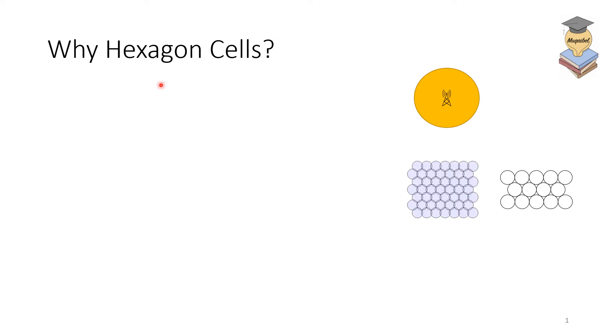Why hexagonal cells? Let's start by defining what a cell is. A cell is an area over which a base station has a good coverage. So this is the base station, and we have an area that is having good coverage. This is called a cell.